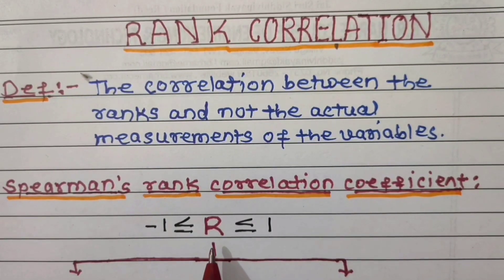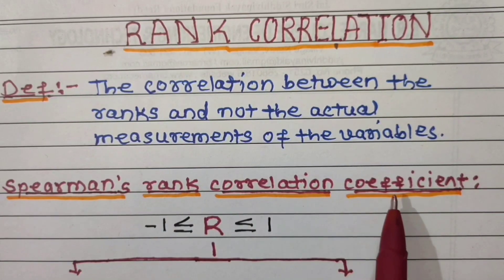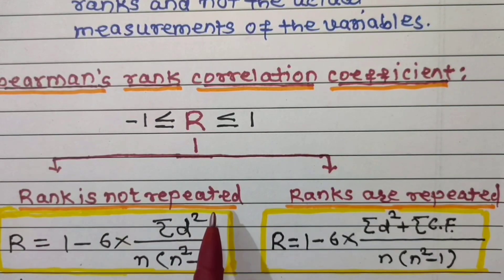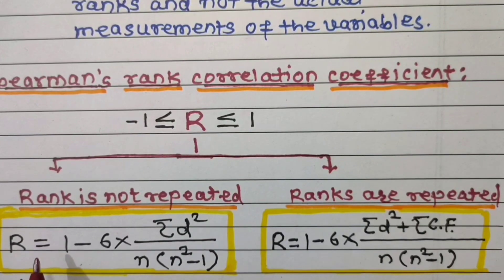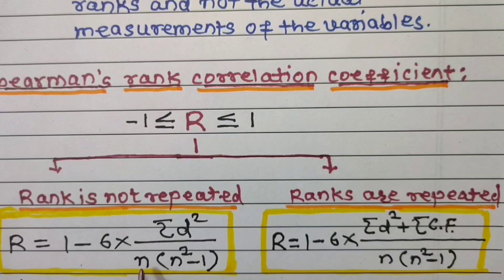There are two formulae for Spearman's rank correlation coefficient. If ranks are not repeated, or values of the variable are not repeated, then Spearman's rank correlation coefficient is given by: R = 1 minus 6 times summation of d² divided by n(n² − 1).